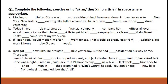Part A. 'Moving to ___ United States was ___ most exciting thing I have ever done.' Which article will come before United States? Yes, you are right — 'the', because United States is the name of a country in the plural. In the second blank, 'the' will come because we use the definite article with a superlative adjective.